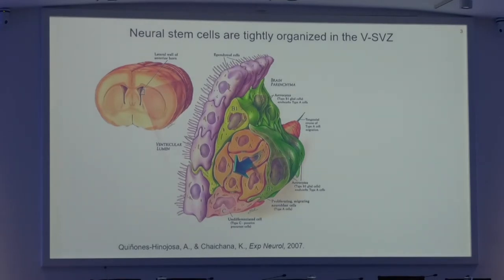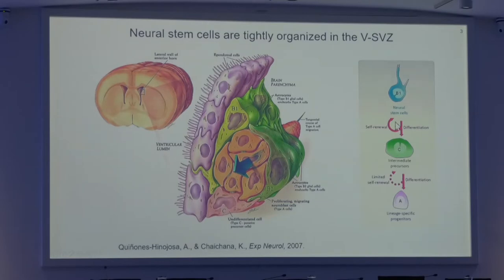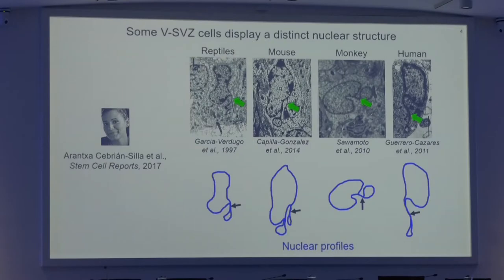Here we have the cellular composition of the ventricular subventricular zone, where we have neural stem cells or type B cells, represented in green in the diagram, which are just beneath the ependymal cell layer lining the walls of the lateral ventricles. These neural stem cells have astroglial features and are able to self-renew, but also to give rise to intermediate precursors or type C cells, and eventually turn into new neurons, oligodendrocytes, or astrocytes. Most of the experiments I will show you next were performed by Arantxa Cebrián during her PhD in our lab.